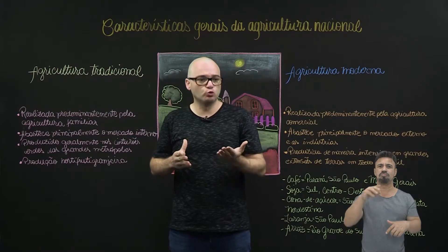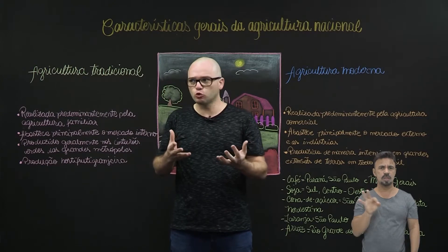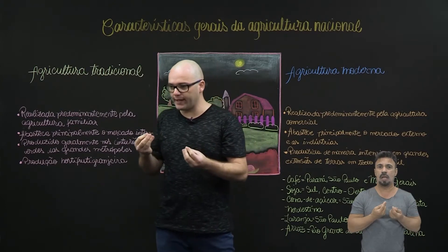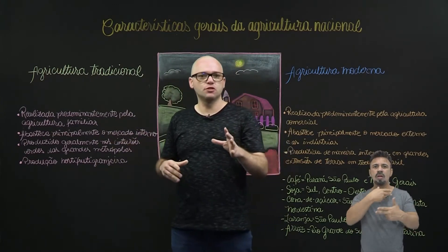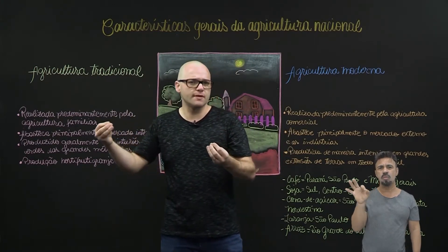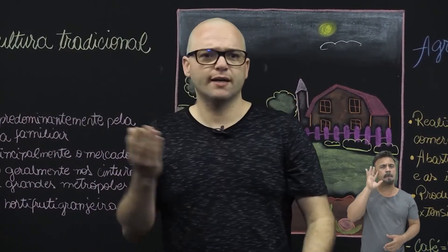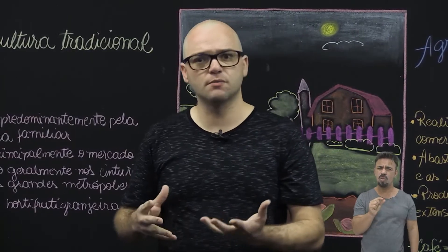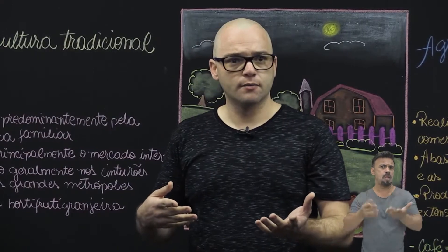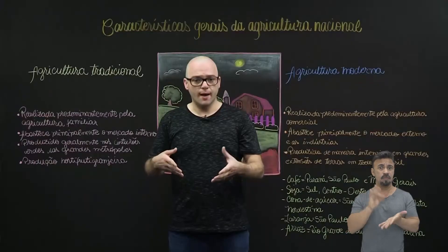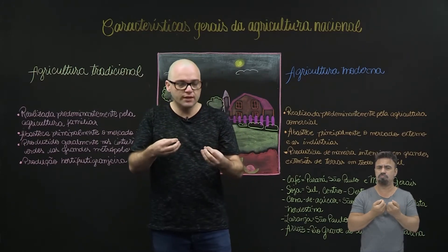Ela corresponde ao produto interno bruto de 5%. Percebam que toda a economia gerada pelo país, entre a agricultura junto com a pecuária, ela corresponde a 5%. Se colocarmos também o extrativismo, vai para 6%. Aí a gente pensa: nossa, é tão pouco assim? Apesar de parecer pouco, é muita coisa, é muita produção.